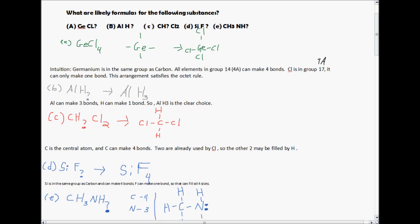For B, you have aluminum as Al, and how many hydrogens can fit on there? Well, aluminum can make three bonds, and hydrogen can only make one bond, so AlH3 is the clear choice.